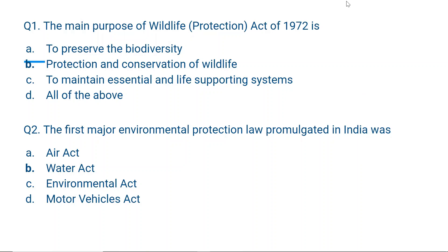Question number 1. The main purpose of Wildlife Protection Act of 1972 is: A) to preserve biodiversity, B) protection and conservation of wildlife, C) to maintain essential and life supporting systems, D) all of the above. Correct answer is B — protection and conservation of wildlife.